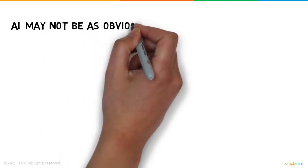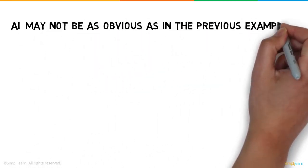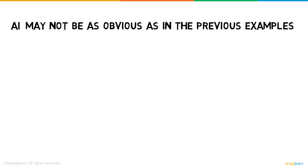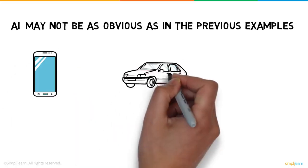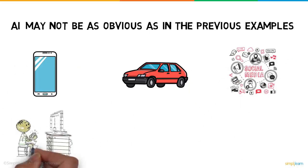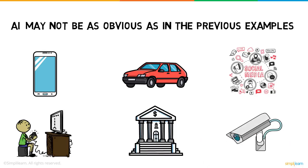But AI may not be as obvious as in the previous examples. In fact, AI is used in smartphones, cars, social media feeds, video games, banking, surveillance, and many other aspects of our daily life.